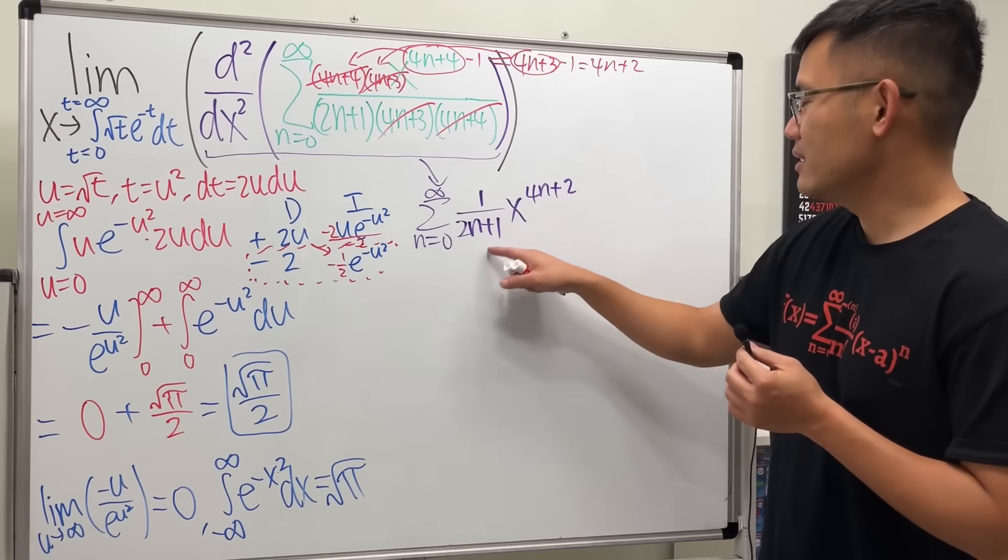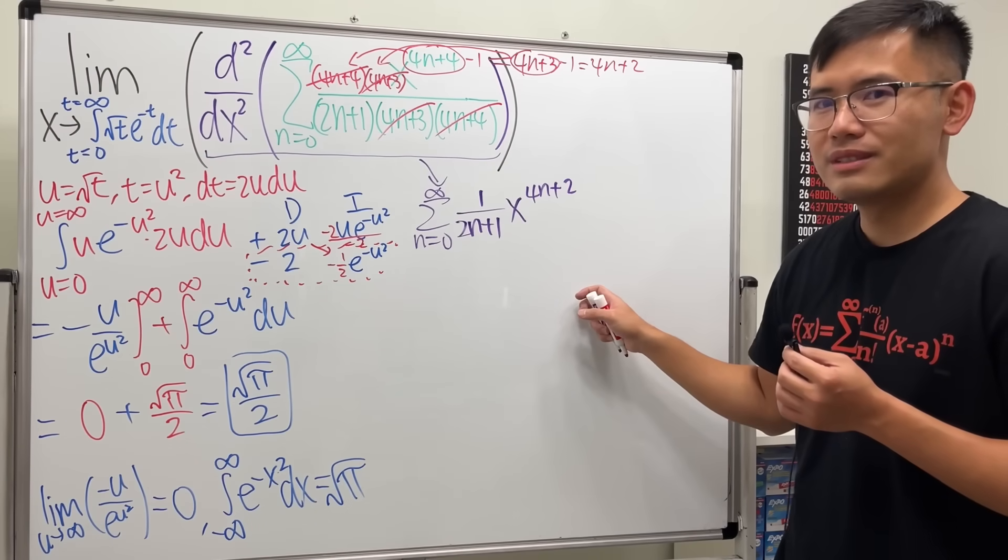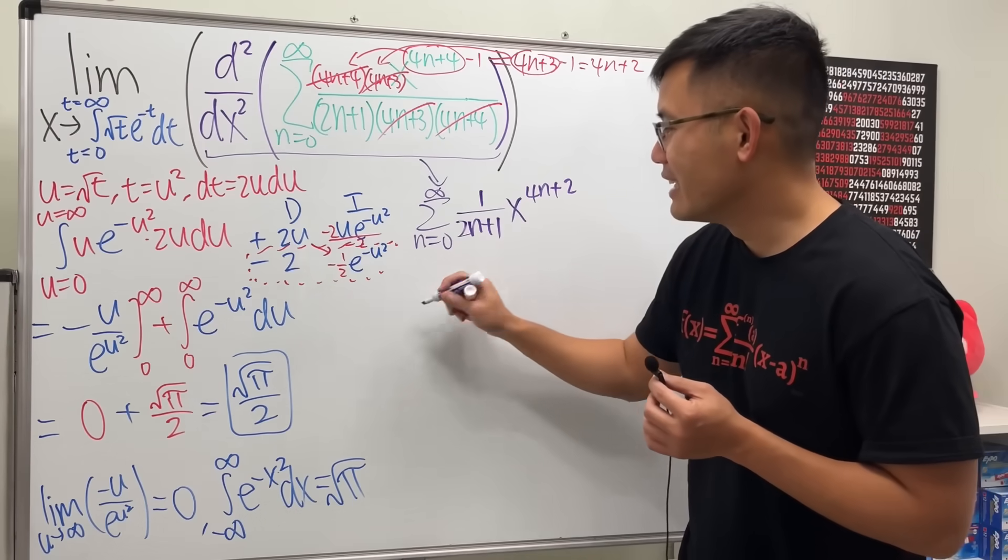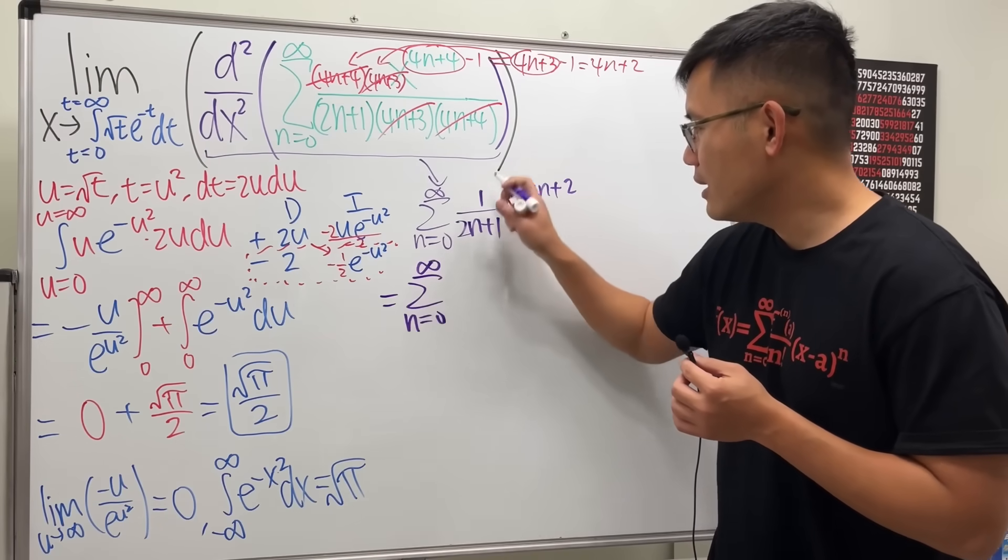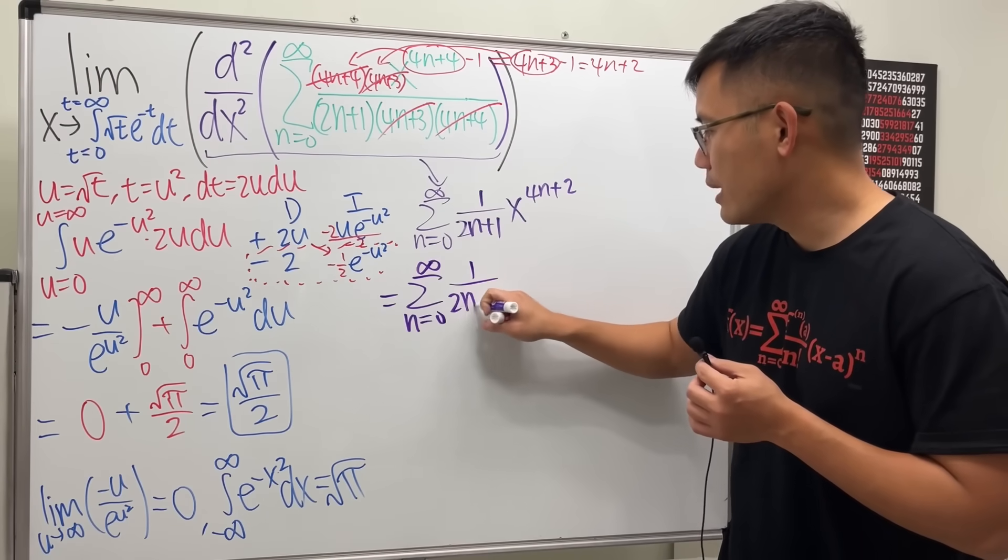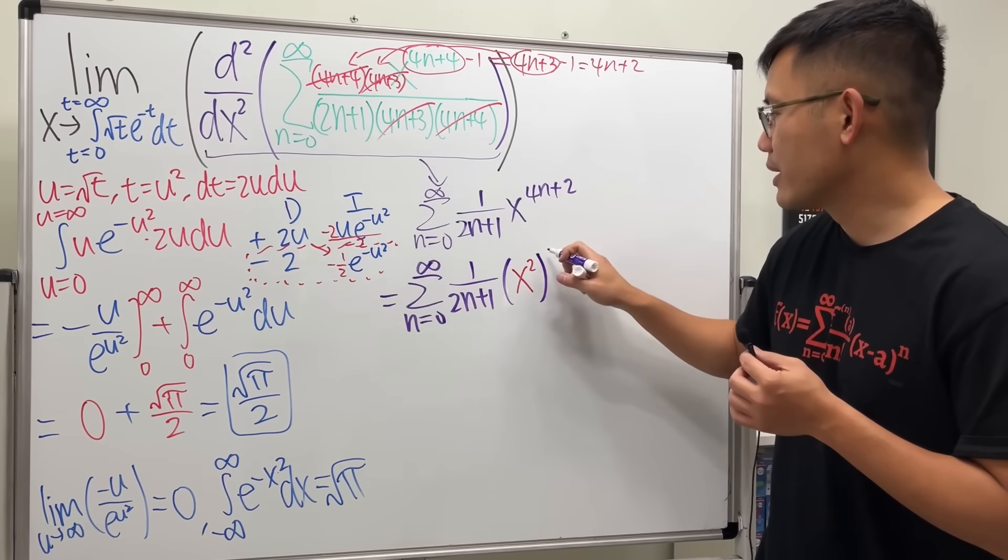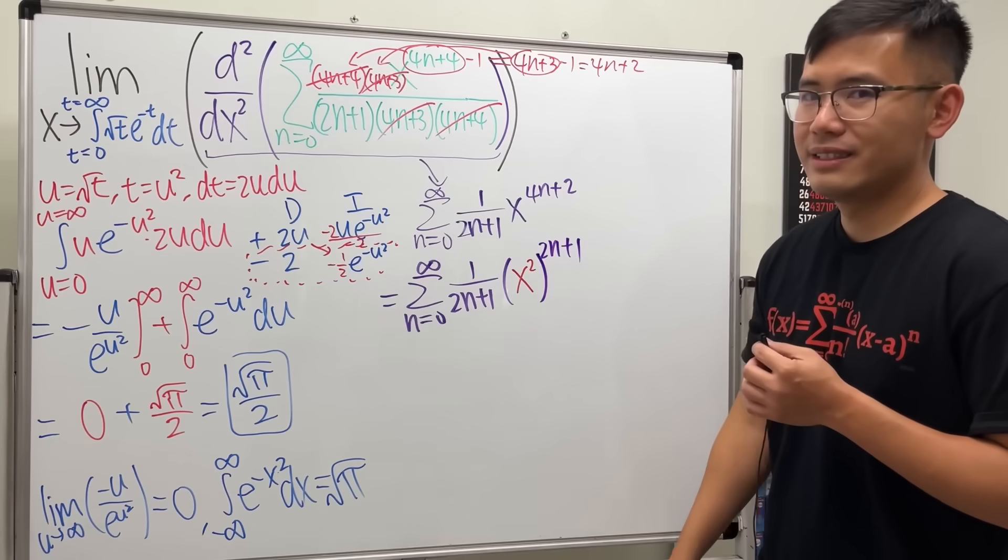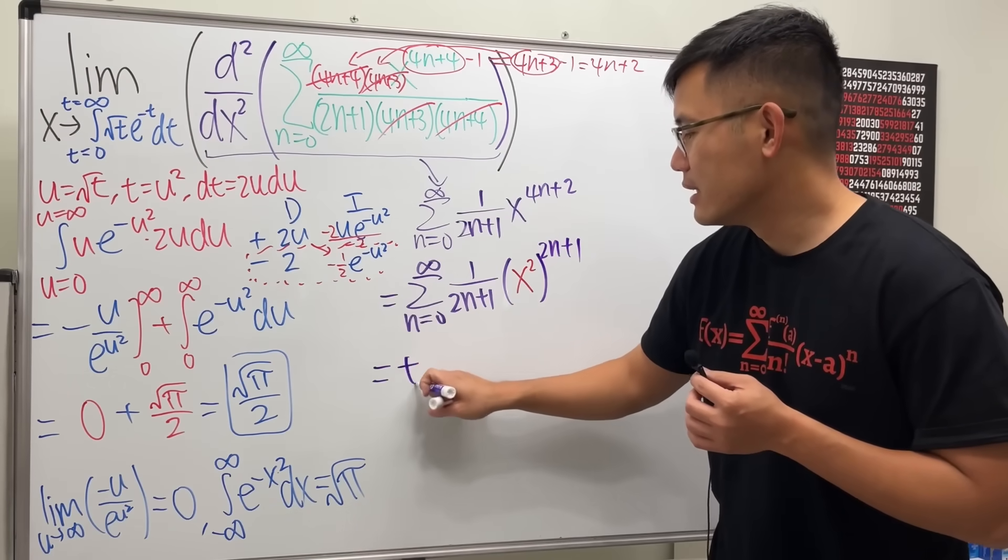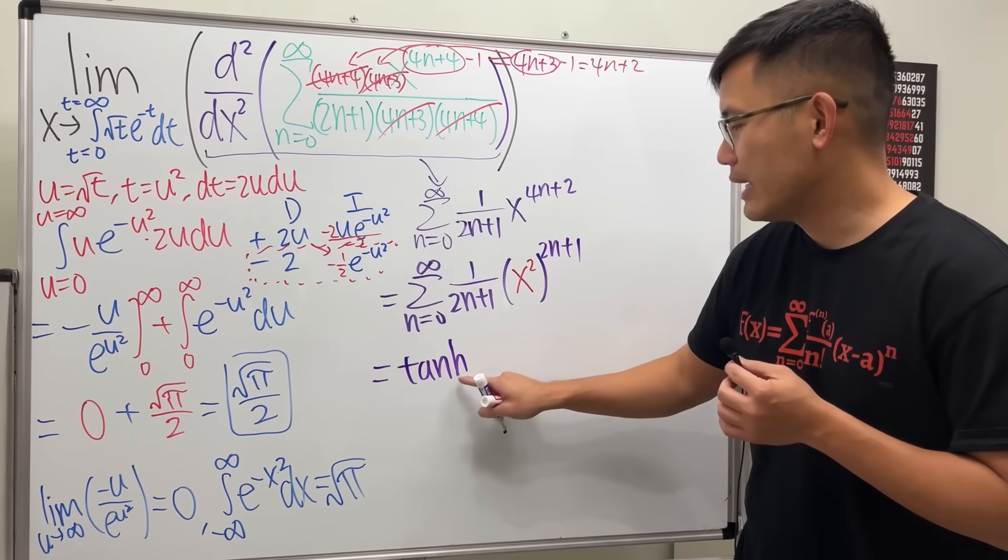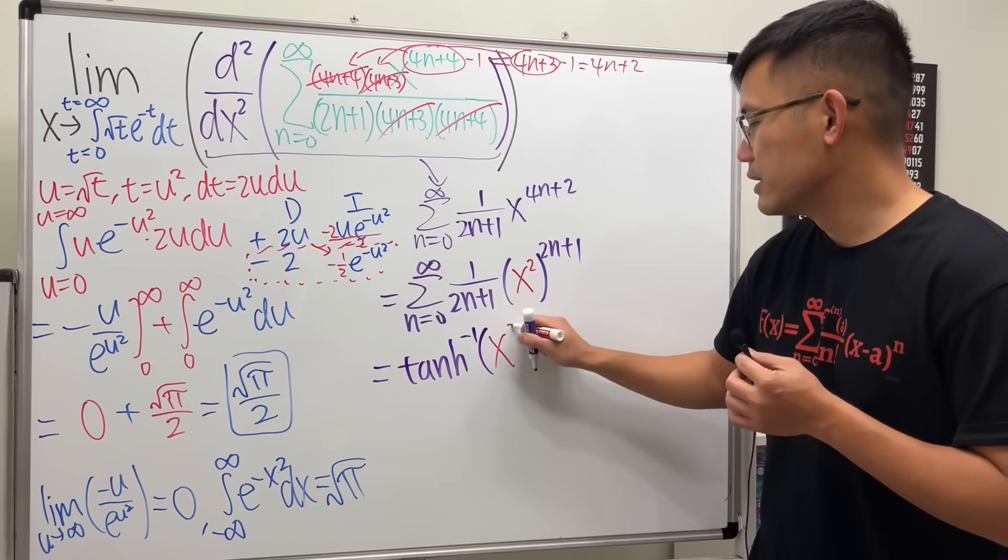But the powers, they don't match. This is 4n plus 2. This is 2n plus 1. Don't worry. Check this out. This right here, we can write this on purpose. That n goes from 0 to infinity. And this right here is 1 over 2n plus 1. For the x, let's put it as x squared. And then this right here becomes 2n plus 1. Yes. And we can say that this is not regular tangent, but rather the hyperbolic tangent. And this, as I said, is the inverse version. And the input is x squared.